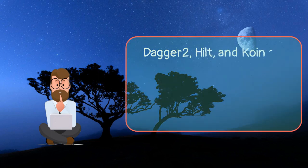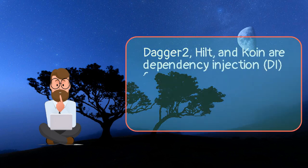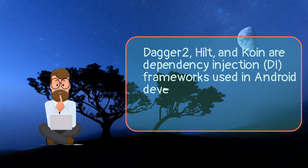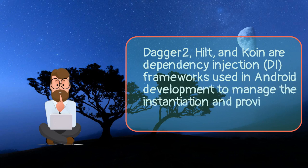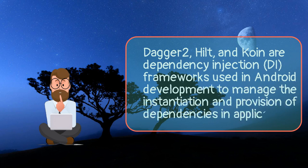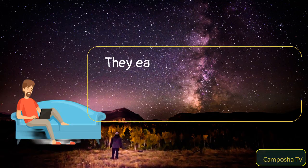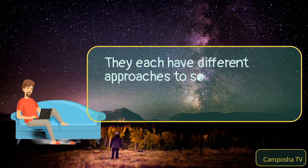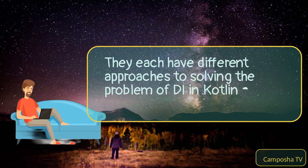Dagger2, Hilt, and Koin are dependency injection (DI) frameworks used in Android development to manage the instantiation and provision of dependencies in applications. They each have different approaches to solving the problem of DI in Kotlin and Java-based Android applications.